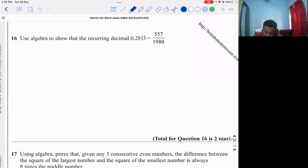Use algebra to show that recurring decimal 0.2813, where 13 is recurring, equals 557 by 1980. So 0.28, then 131313 repeating. This value is repeating and we need to show that it equals 557 by 1980.